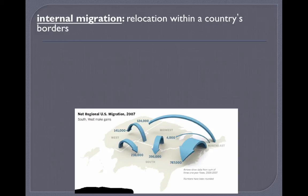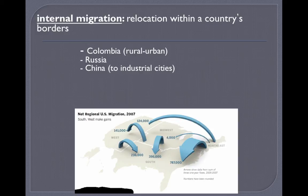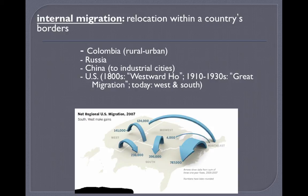Think about why people are moving south and west. Other places exhibiting internal migration include Colombia, seeing a shift from rural to urban spaces; Russia and China, with significant movement toward industrial cities seeking economic opportunities. In the US, there's a long history of internal migration — from 19th-century westward expansion and manifest destiny, to the Great Migration of 1910–1930s, to today's movement toward the west and south.